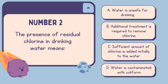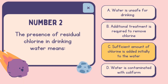Number two: The presence of residual chlorine in drinking water means — A. Water is unsafe for drinking. B. Additional treatment is required to remove chlorine. C. Sufficient amount of chlorine is added initially to the water. D. Water is contaminated with coliform. The correct answer is C. Sufficient amount of chlorine is added initially to the water.